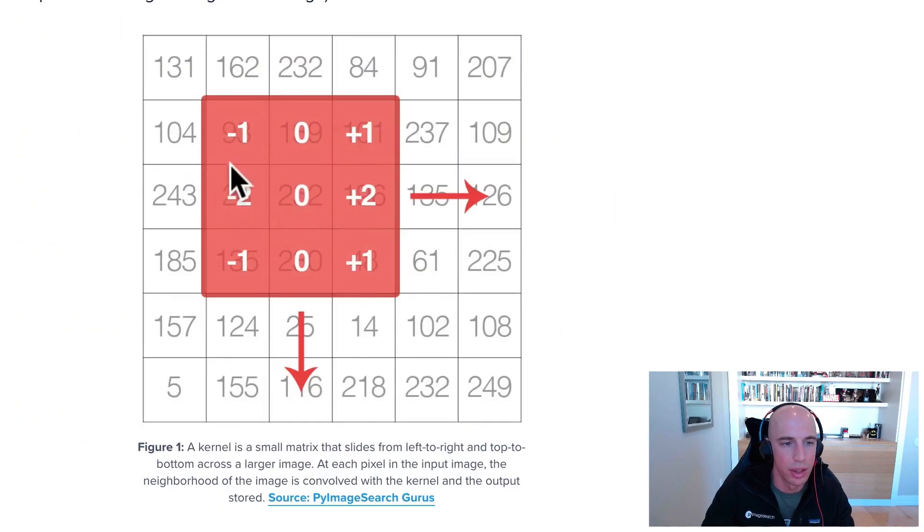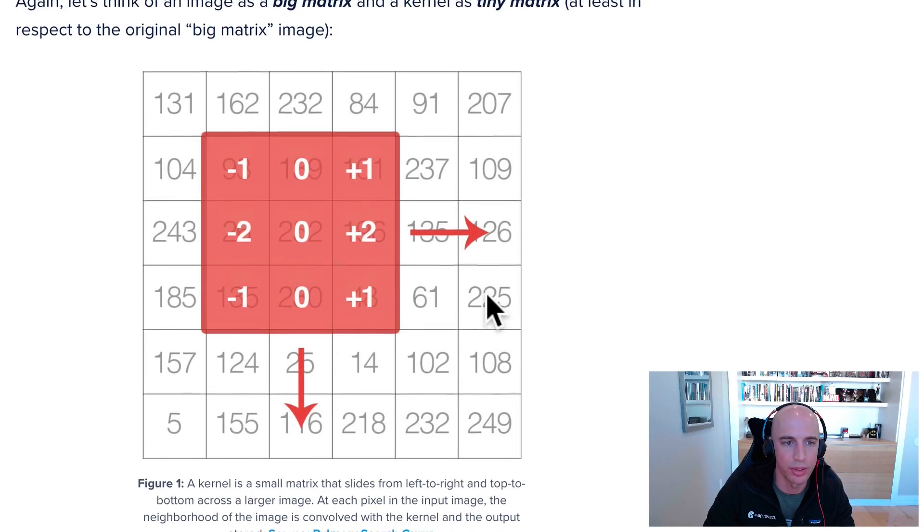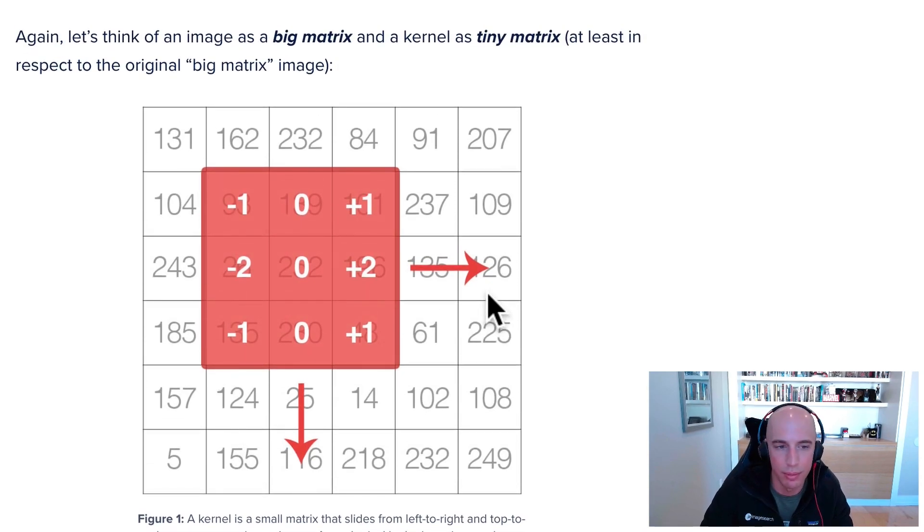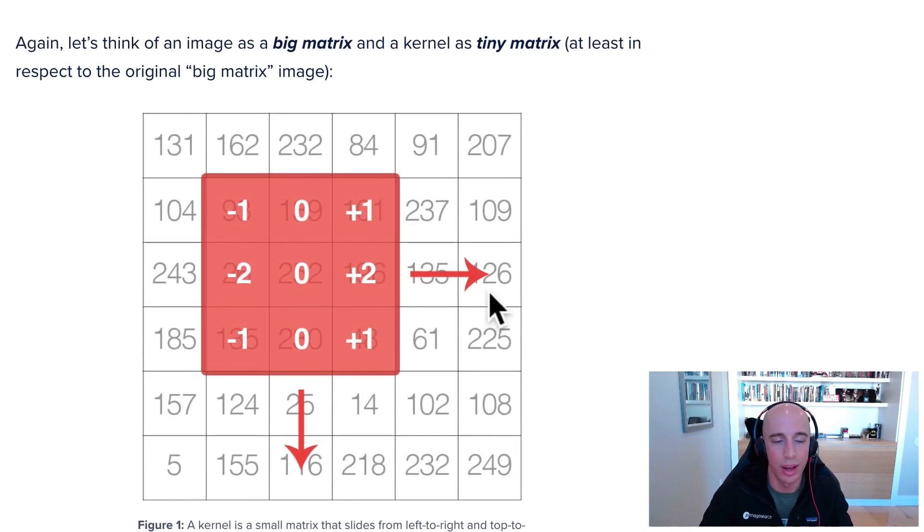Going back here, keep in mind convolution works by taking a kernel and an input image, placing the center of the kernel on top of a pixel, sliding from left to right, top to bottom, all the way through this process. That's all there is to it.